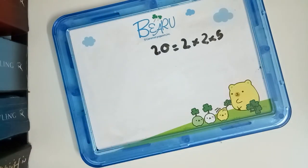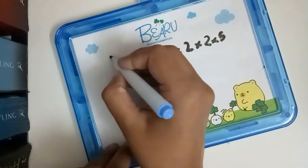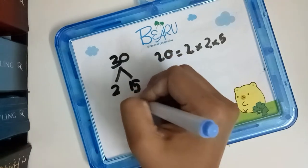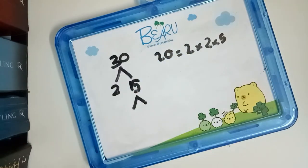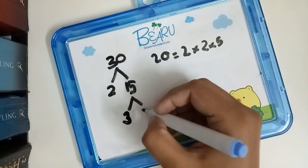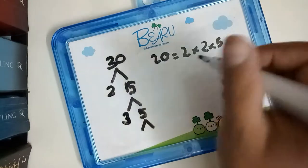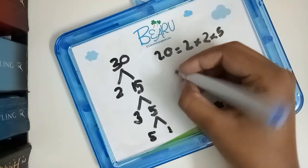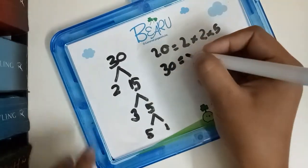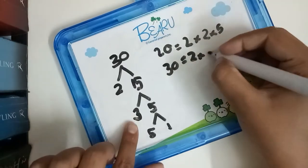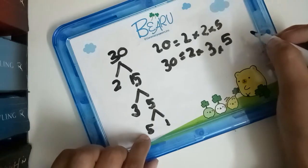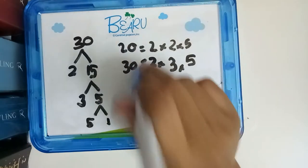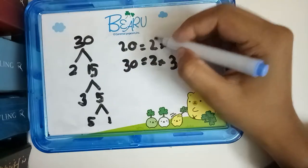Now we're finding the HCF between 20 and 30. For 30: is 30 divisible by 2? Yes, giving 15. Is 15 divisible by 2? No. By 3? Yes, giving 5. Is 5 divisible by 3? No. By 5? Yes. So 30 is equal to 2 multiplied by 3 multiplied by 5. To find the HCF, we compare the factors of 20 and 30.